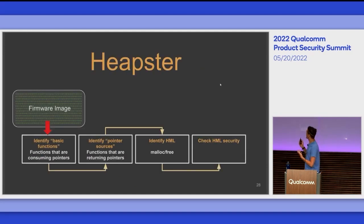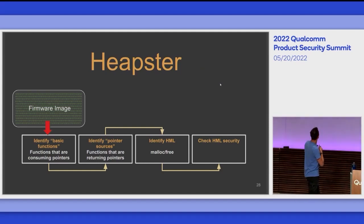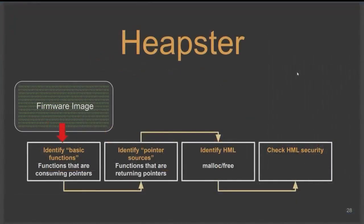That being said, we put together Hipster. The main steps of the system are: we receive an unknown firmware image we know nothing about besides the fact it's for Cortex-M. First, we identify basic functions — functions manipulating pointers, copying memory, or comparing memory. Then we identify pointer sources — functions returning crafted pointers. Then we identify the HML. Finally, we check security. We'll dive into all these steps in the next few slides.